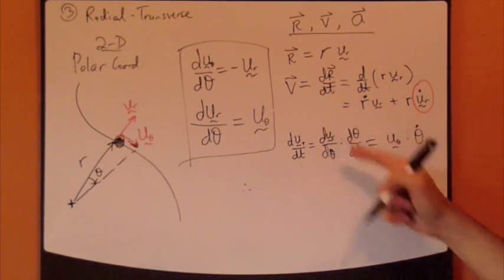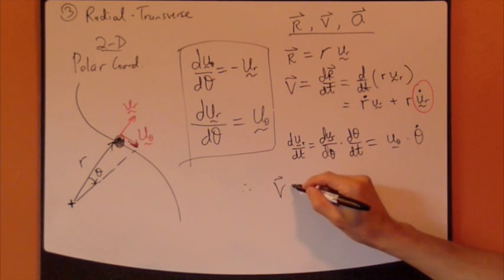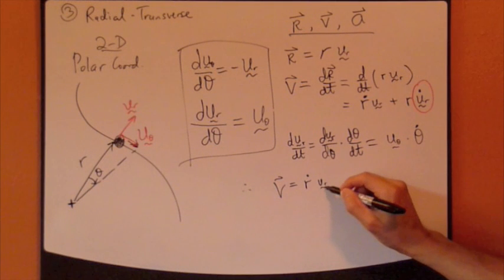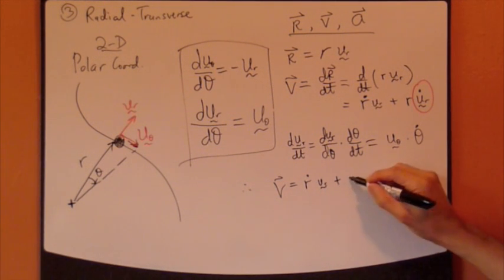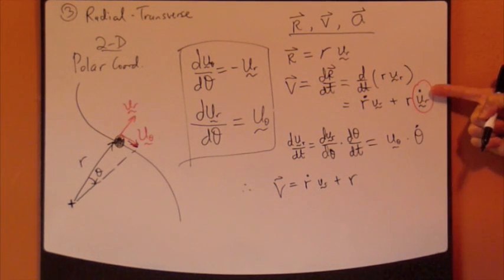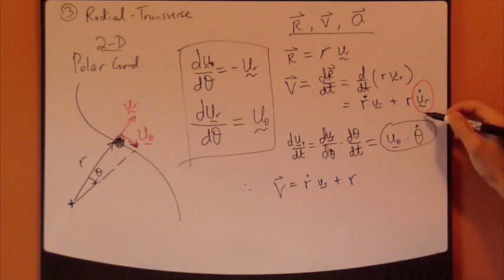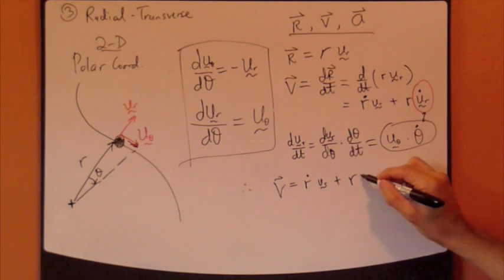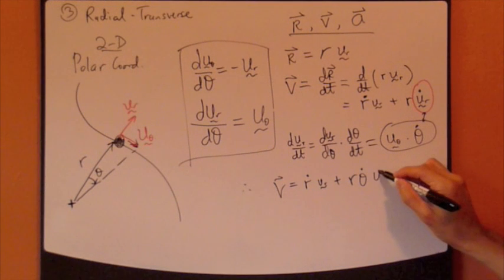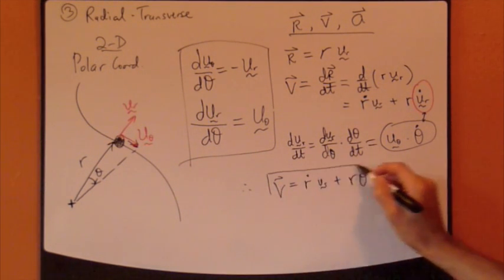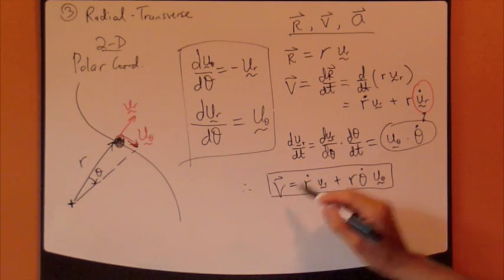So now, du_r/dθ is exactly this guy right here, which is exactly u_θ. And dθ/dt is simply θ_dot. So put this back in here. The velocity vector is r_dot·u_r plus r times u_r·θ, which is this right here. So θ_dot·u_θ. That's it.